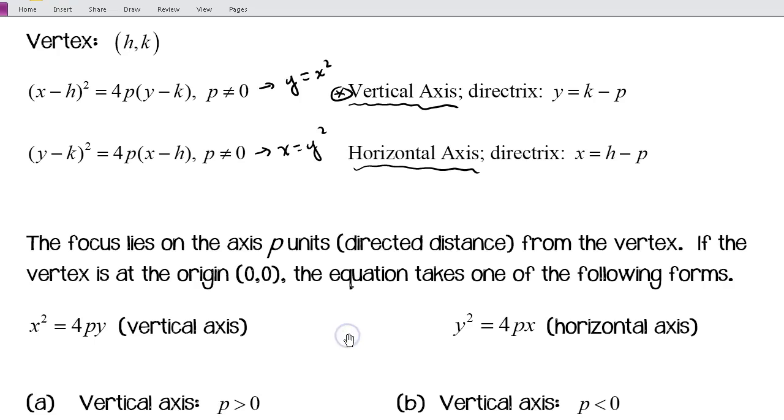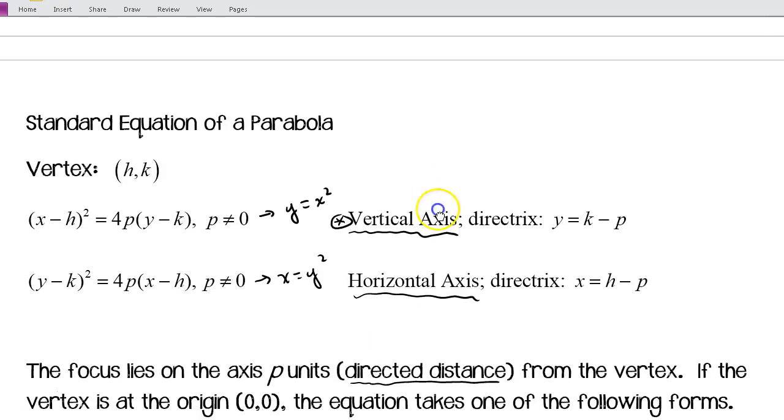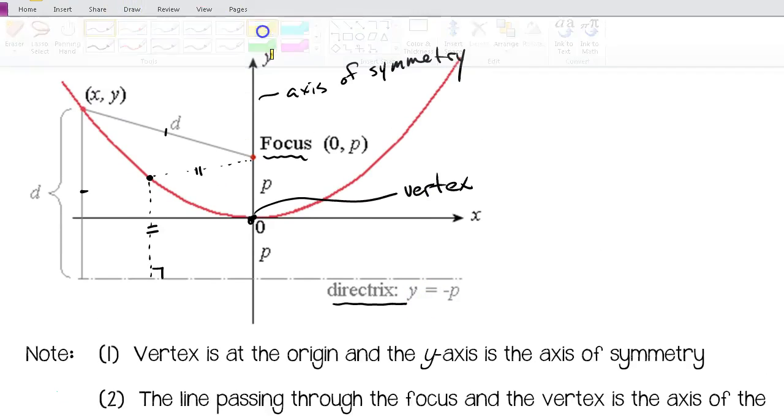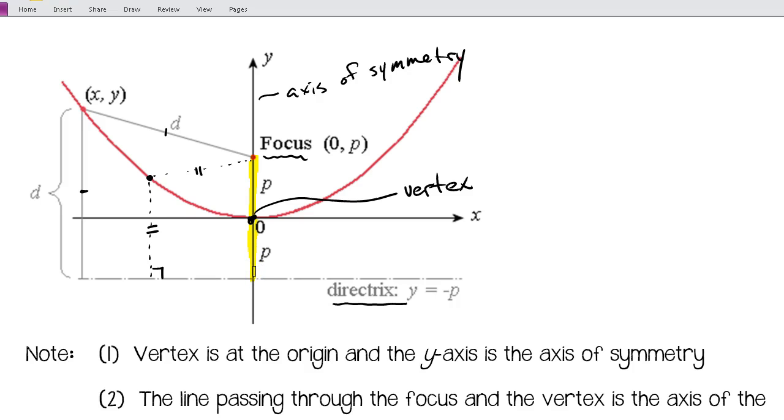This value of p: the focus lies on the axis p units—we call this the directed distance from the vertex. If the vertex is at the origin, then the equation takes one of the following forms. Notice this distance here between the vertex and the focus is p, and the distance from the vertex to the directrix is also p. That's our directed distance.